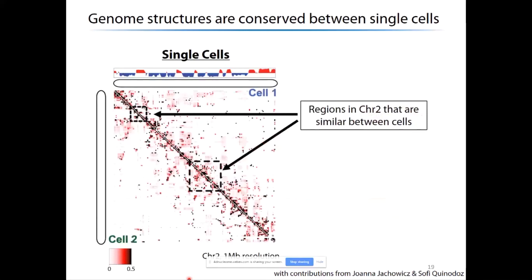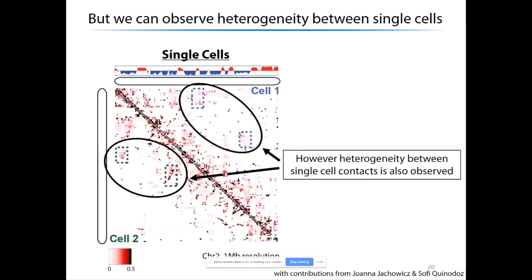When we compare between single cells, we can see regions of chromosome architecture that start to become similar across single cells compared to what we see in bulk. We continue to explore the heterogeneity between single-cell contacts.